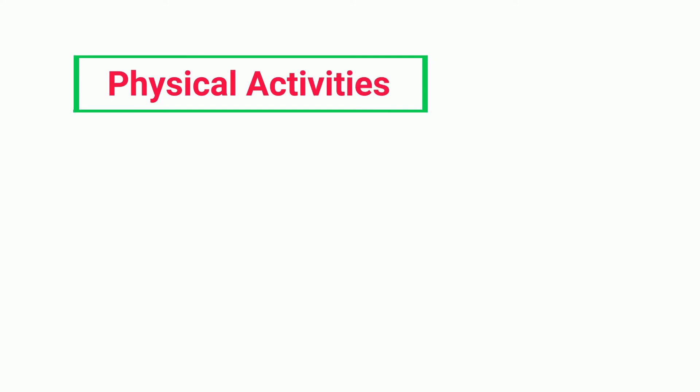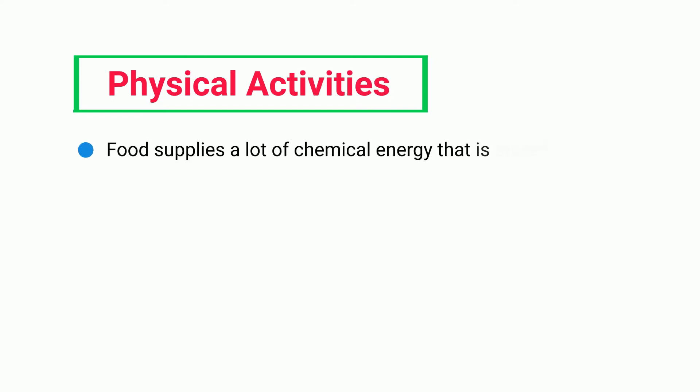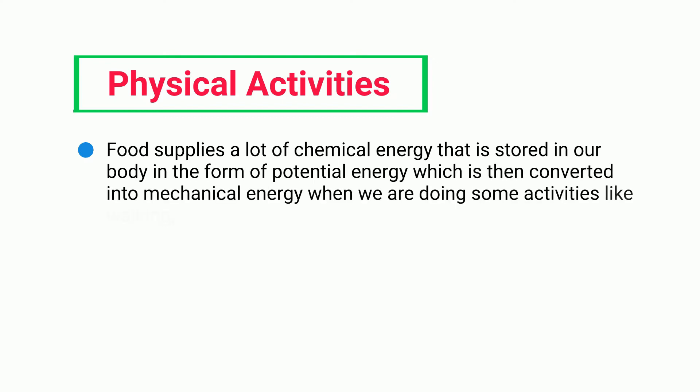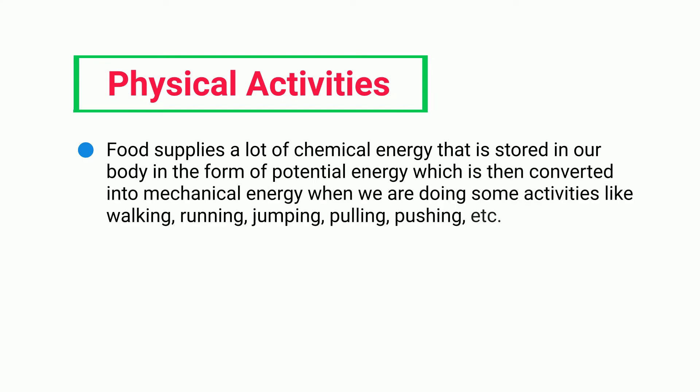Physical activities: food supplies a lot of chemical energy that is stored in our body in the form of potential energy, which is then converted into mechanical energy when we are doing activities like walking, running, jumping, pulling, and pushing.